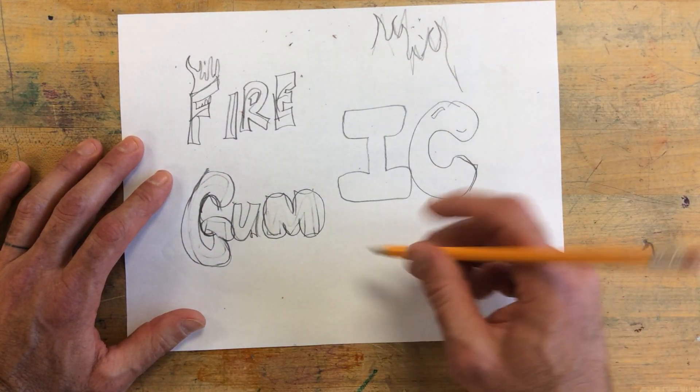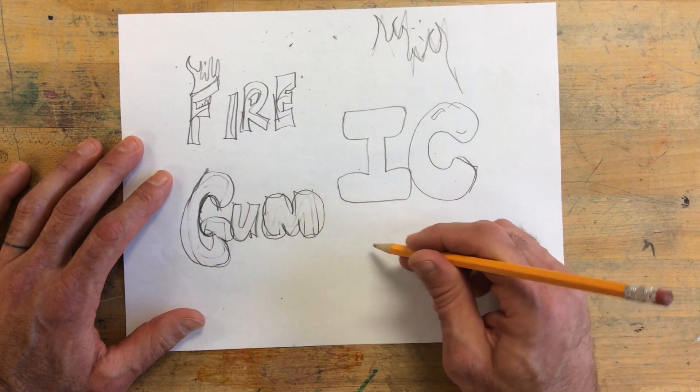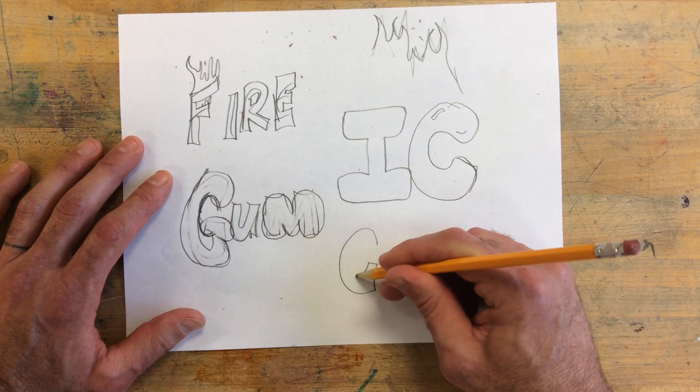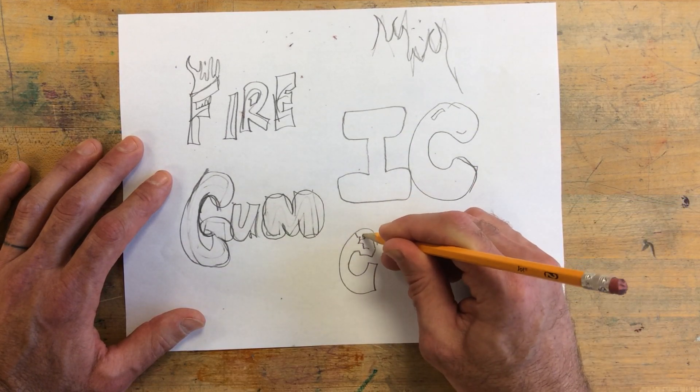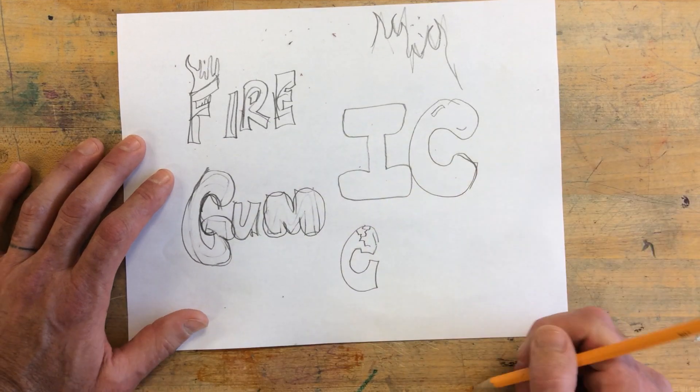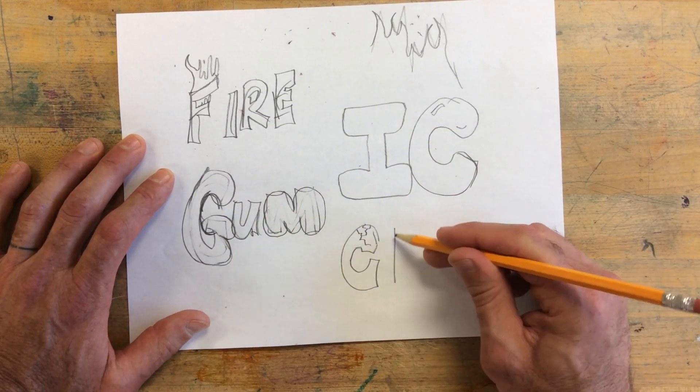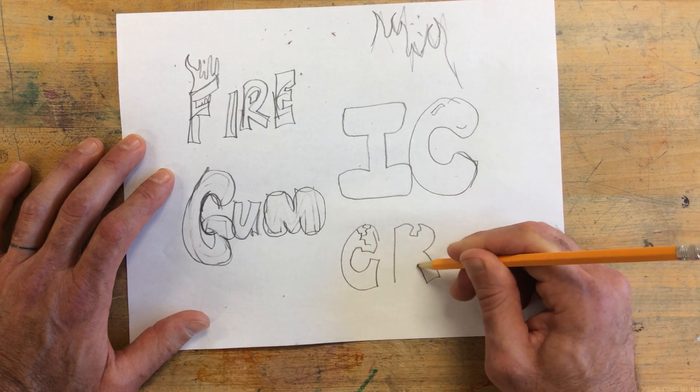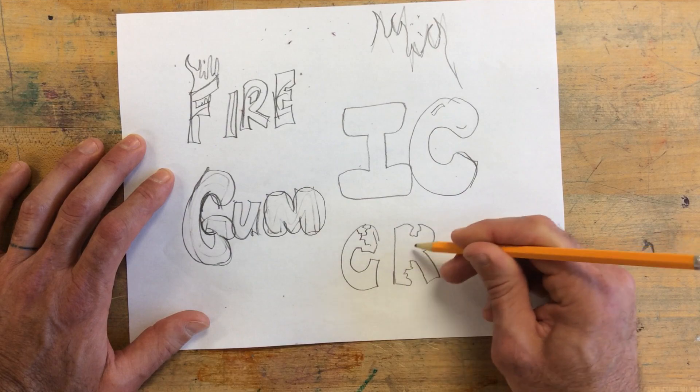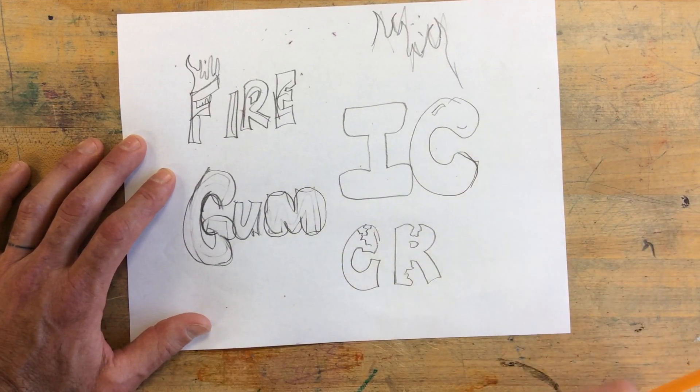Or you could have something like the word crack. And your word could actually have cracks in it. You could have pieces missing.